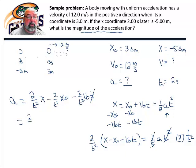So I have 2 over t squared times x, which is negative 5, minus 2 over t squared times x0, which is 3, minus 2 over t times v0, which is 12.